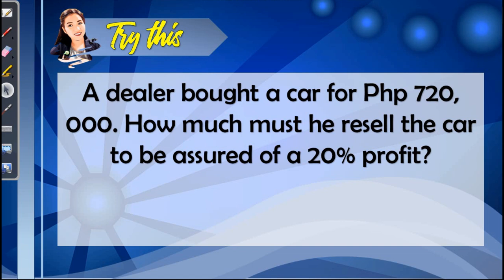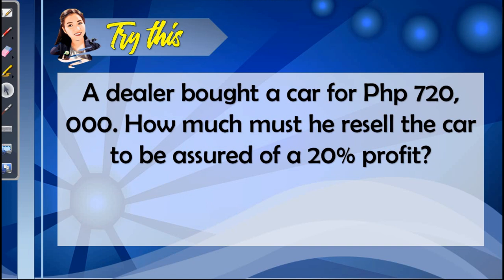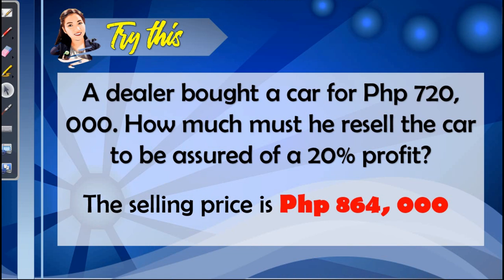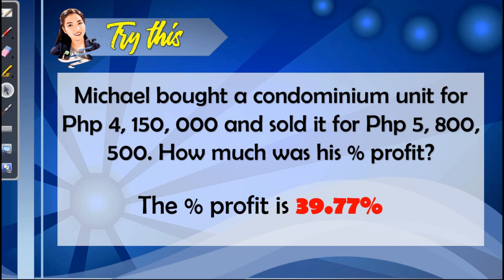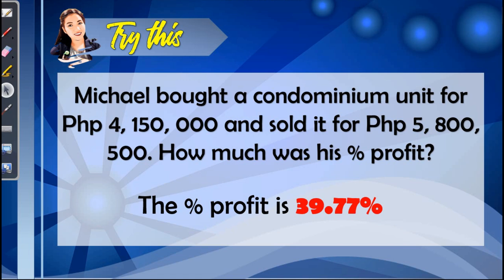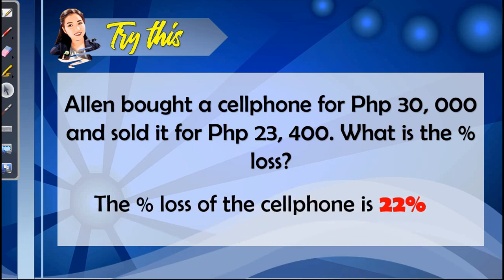After providing an example in dealing with profit or loss, please try the following items. You may pause the video to answer. The answer for the first item is a selling price of $864,000. Let's do another one — the percent profit is 39.77%. Try one more problem: the percent loss of the cell phone is 22%.